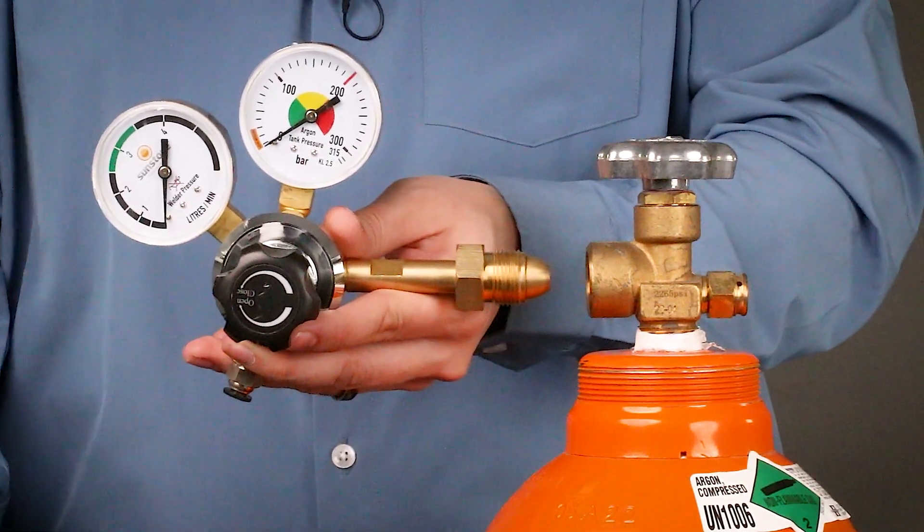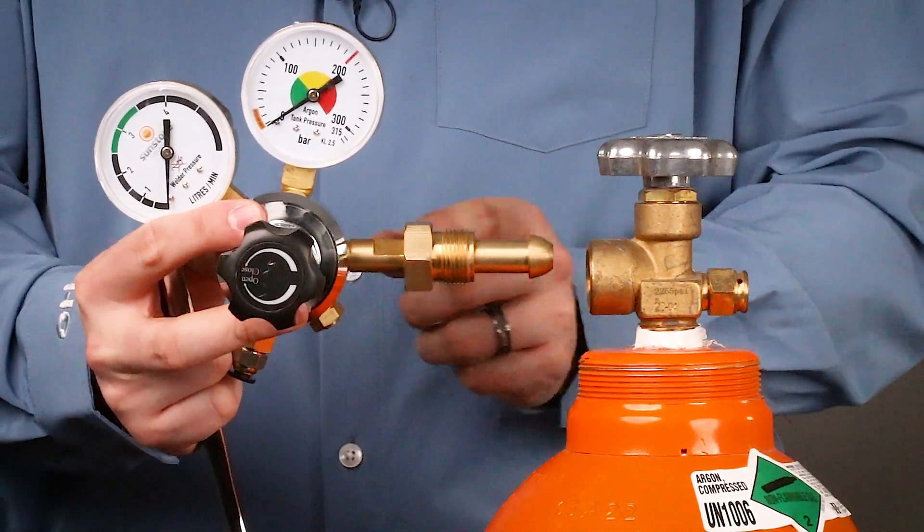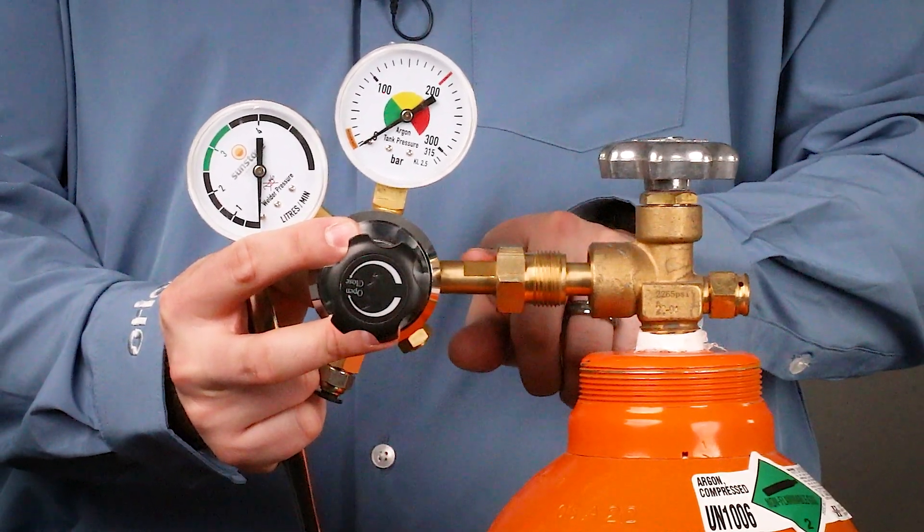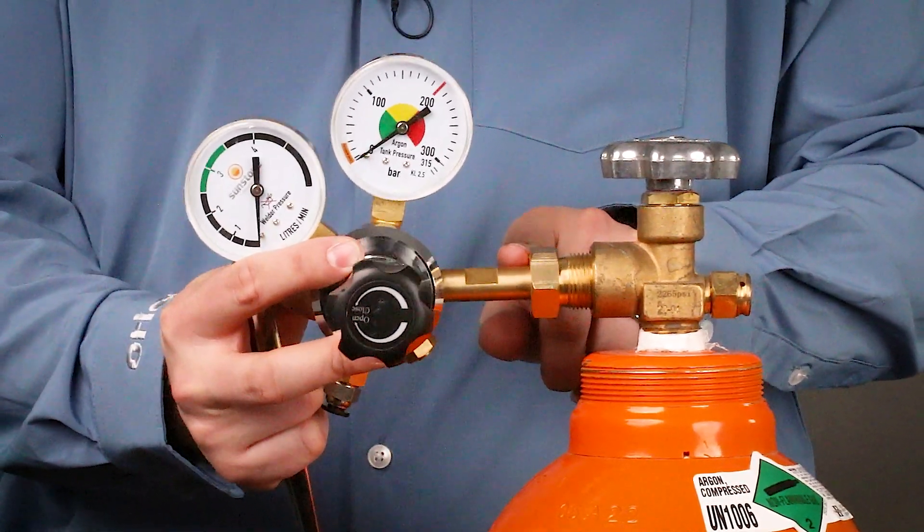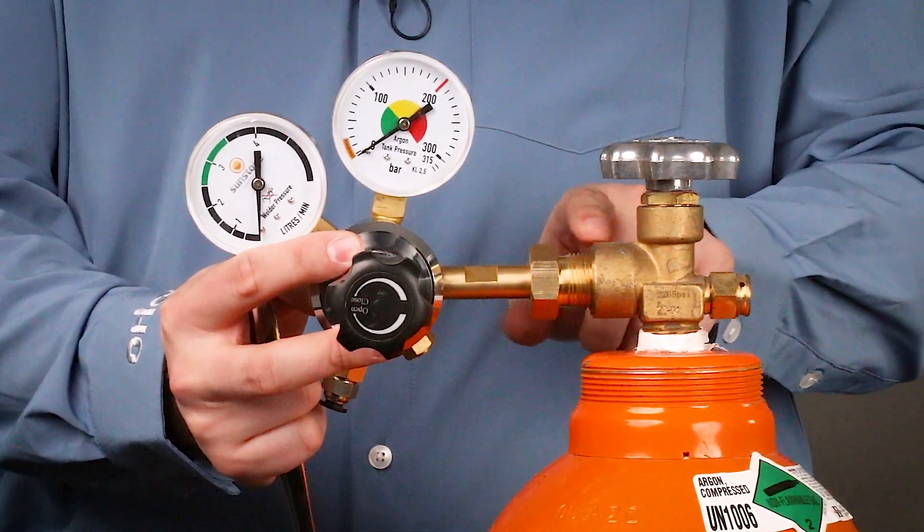To install this properly, we're going to remove this back section. I like putting this section into the Argon tank first and then sliding the threads forward, wiggling it around so the threads marry up properly.